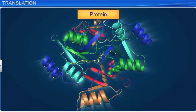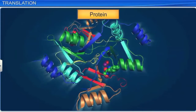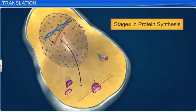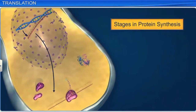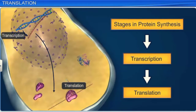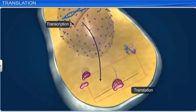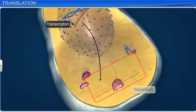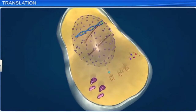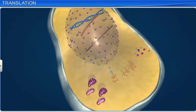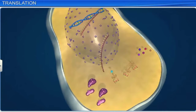Proteins play a pivotal role in the proper functioning of any organism. The synthesis of proteins occurs in a cell in two phases, namely transcription and translation. The process of converting mRNA codon sequences into an amino acid polypeptide chain is called translation. Prior to translation, mRNA, which is synthesized in the nucleus of a eukaryote cell, migrates through the nuclear pore into the cytoplasm of the cell.